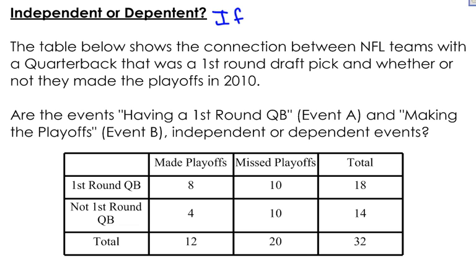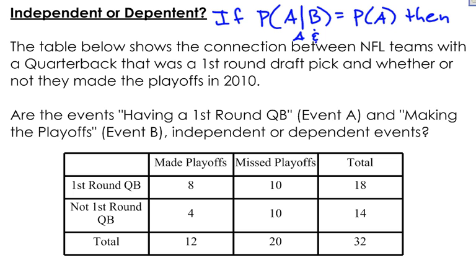If the probability of A given B is equal to just the probability of A, then events A and B are independent events. So using conditional probability, if P(A|B) equals P(A), then A and B are considered independent events. If these are not equal to each other, then A and B are dependent events.